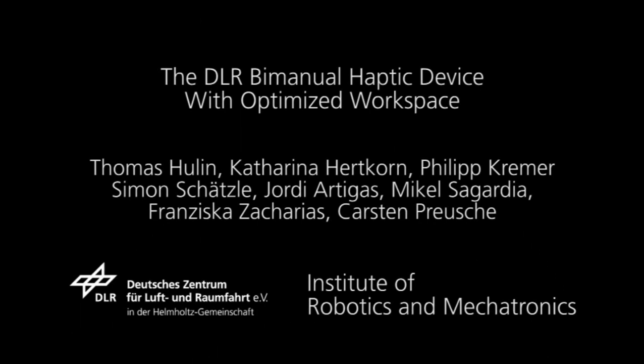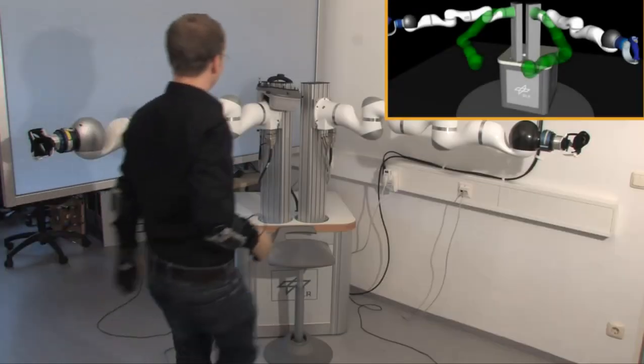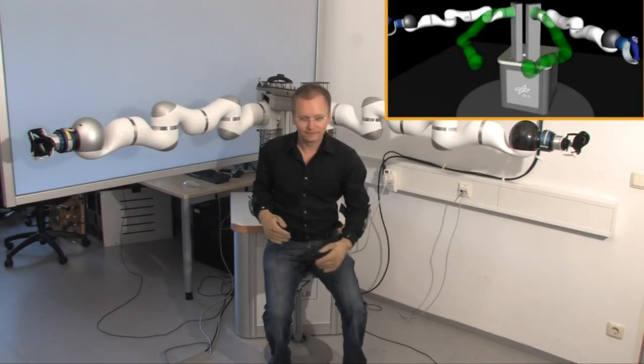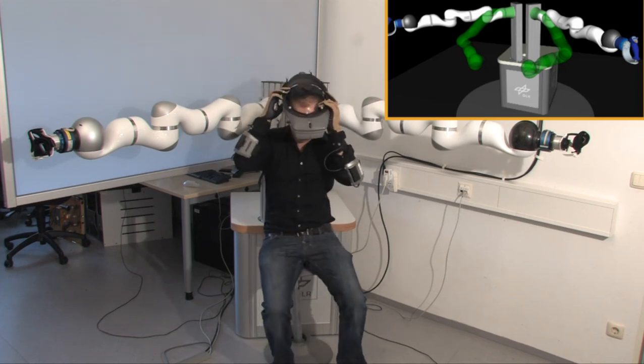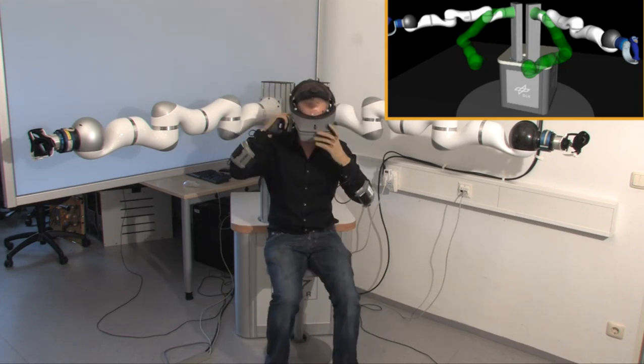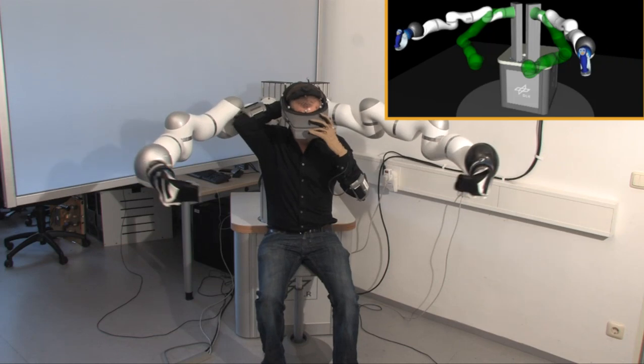The DLR bimanual haptic device with optimized workspace is composed of two lightweight robot arms with adjustable mounting positions. Each arm weighs only 14 kilograms while being able to handle payloads of up to its own weight.